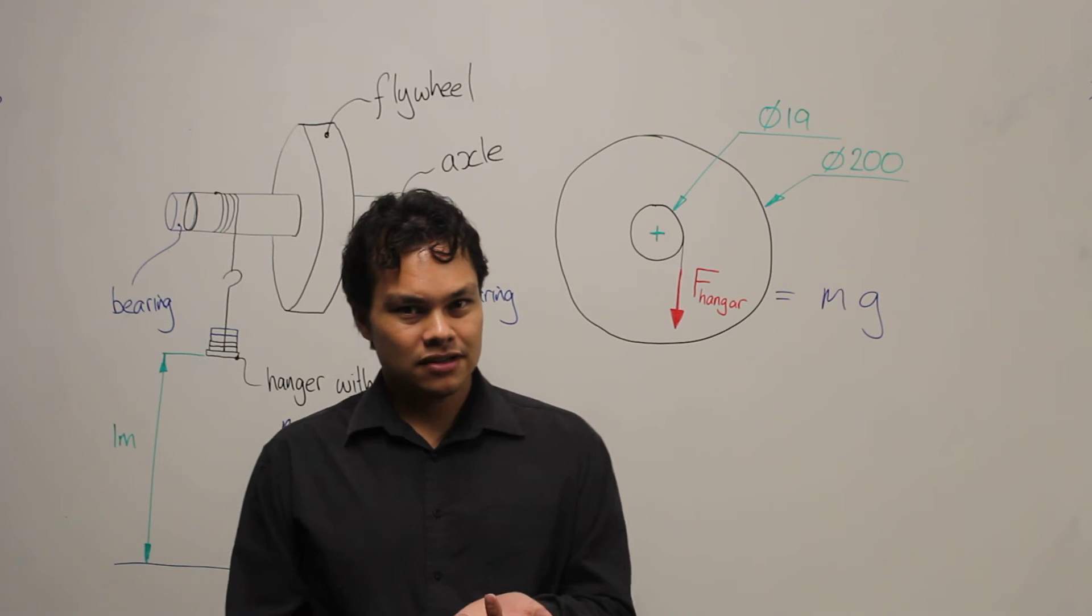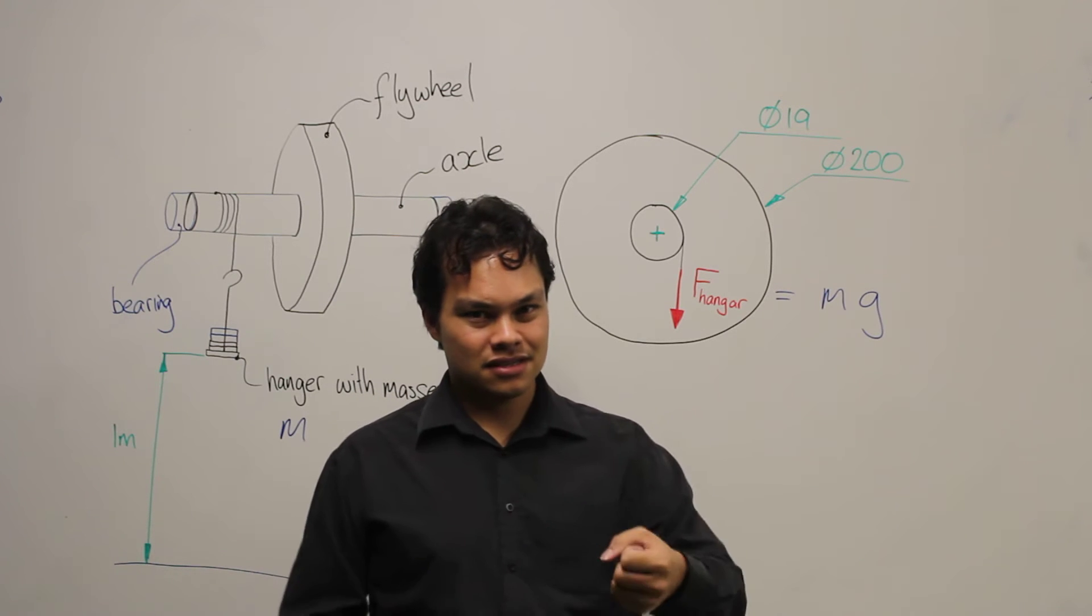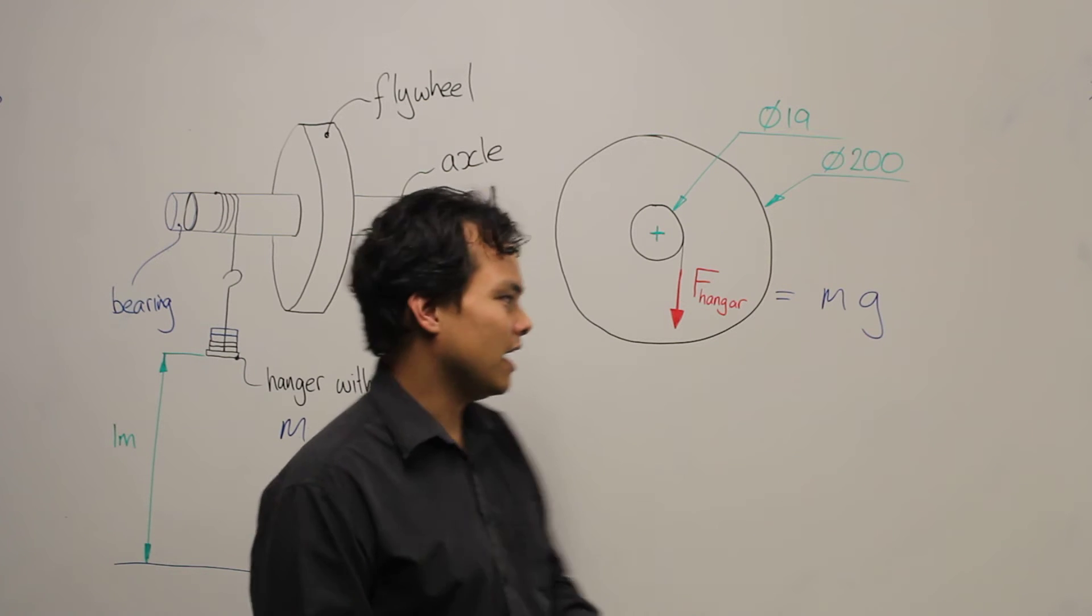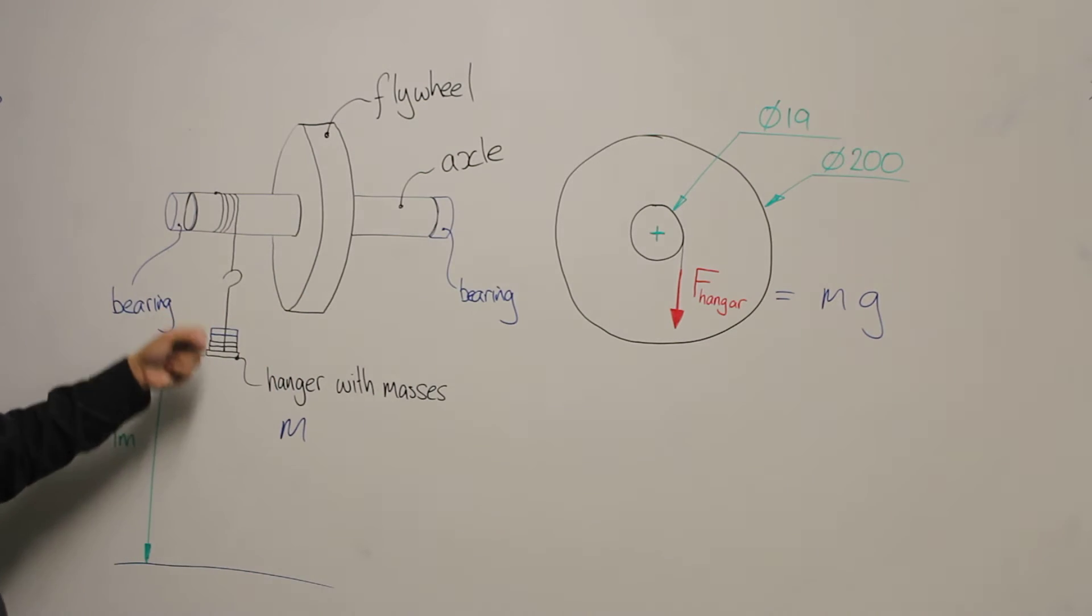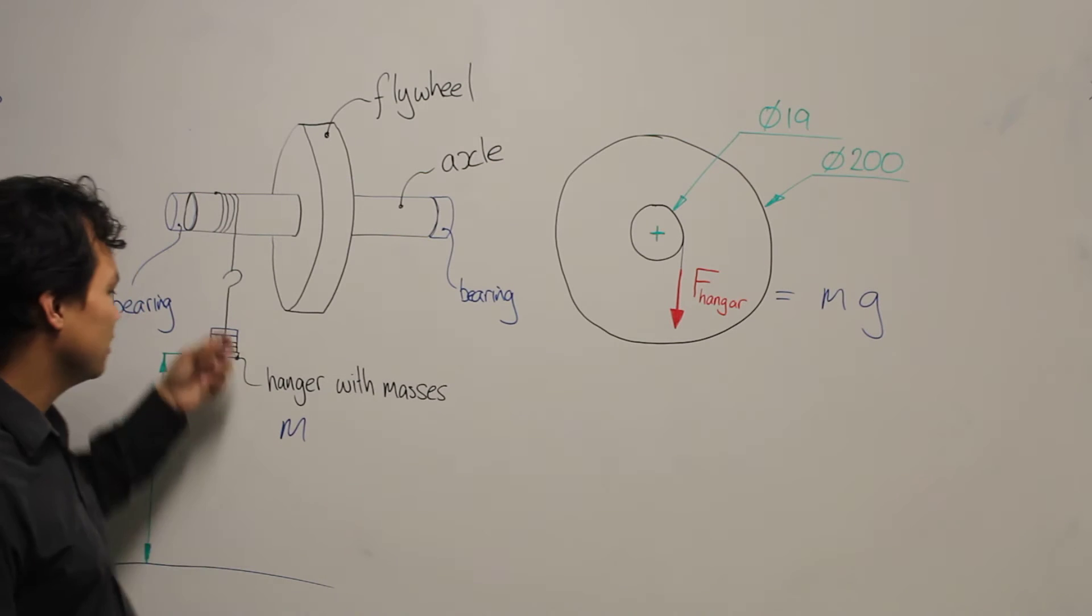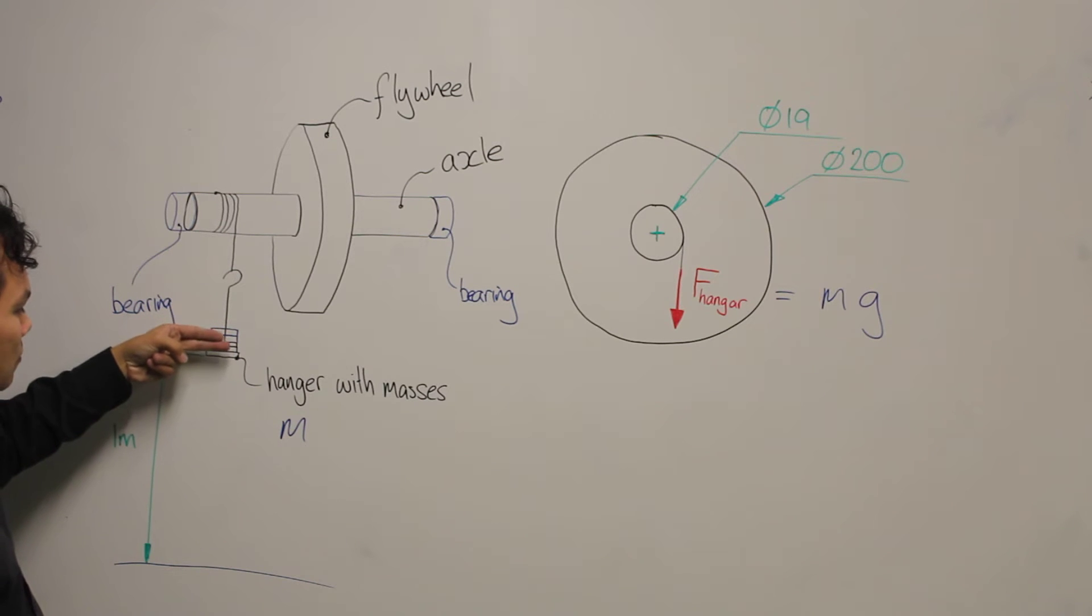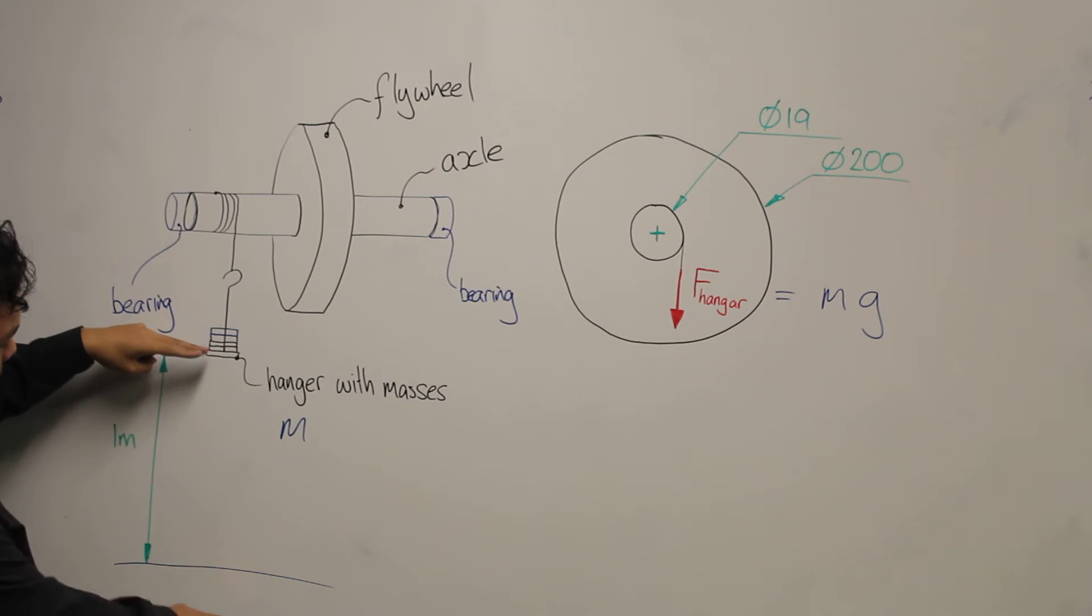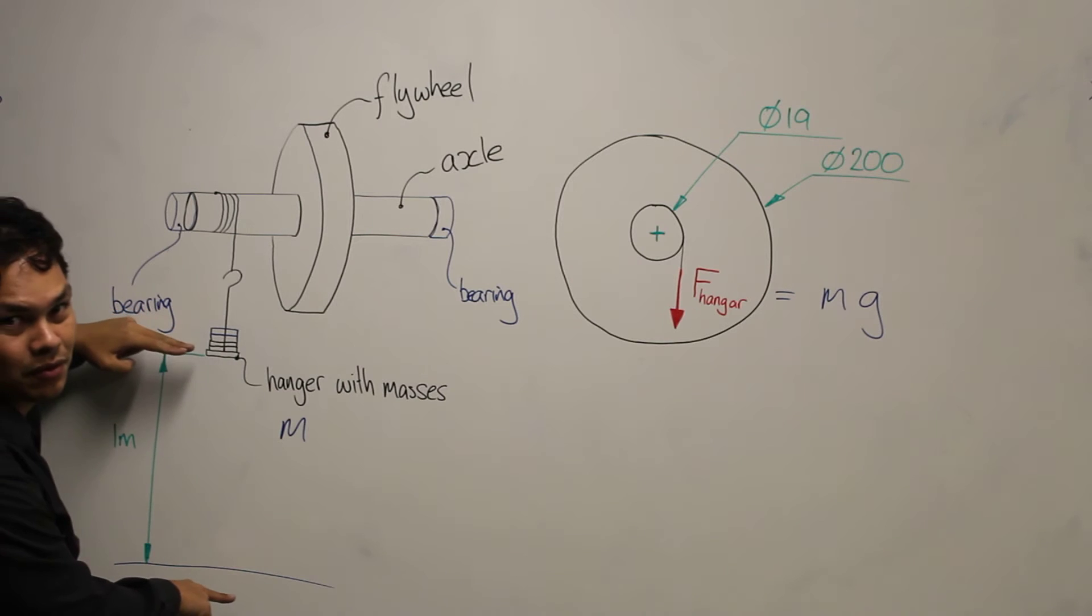In part 2, we'll be placing masses onto our hanger. When we place the masses onto the hanger, the hanger will move and start to travel a distance. We'll set it up so that the hanger is 1 meter away from the ground.